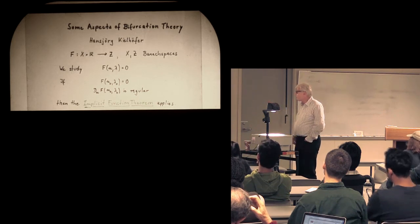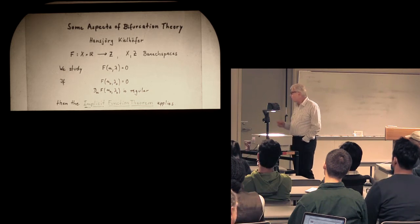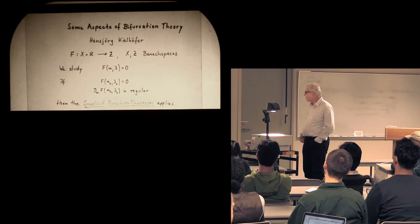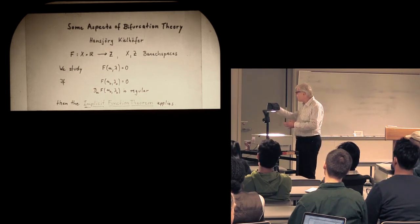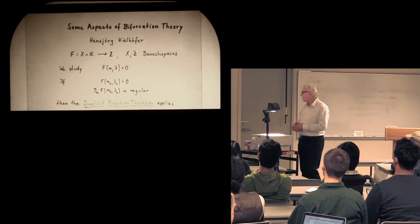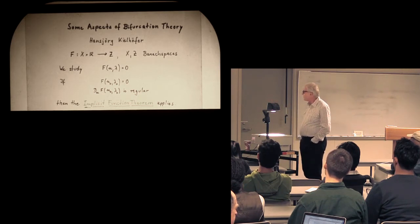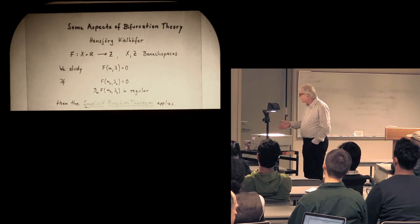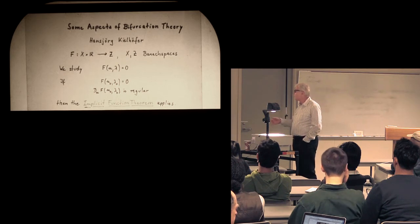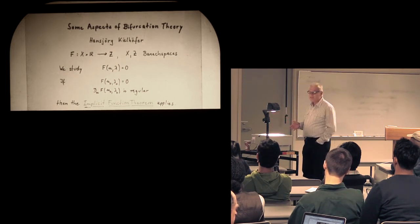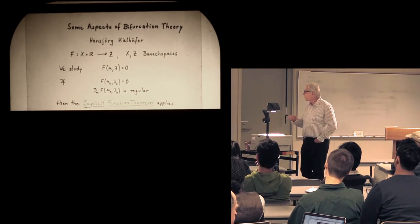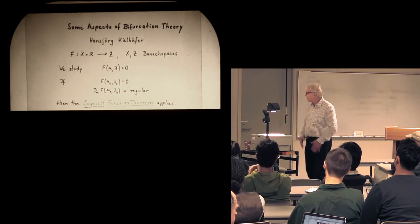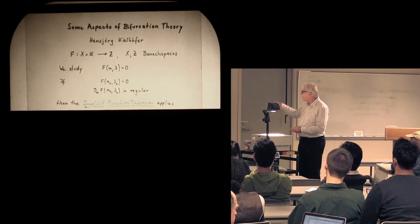If you have one particular solution F(u₀, λ₀) = 0, and if the partial Fréchet derivative with respect to u at this point is regular — meaning the linear operator is bijective and the inverse is continuous — then the implicit function theorem applies. It says: to any λ near this particular λ₀, there exists precisely one zero u, this zero u depends continuously on the parameter λ, and it is unique. In other words, the solution set around this point is a smooth curve through this point.